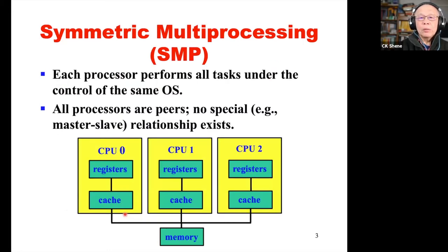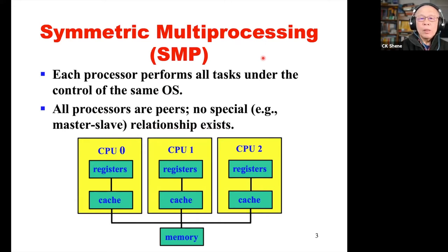But for today, most multiprocessor systems would follow the so-called symmetric multiprocessing — S from symmetric, M from multi, P from processing. In such a system, that is, an SMP system, each processor performs all tasks under the control of the same operating system. All processors are peers; no special relationship exists.